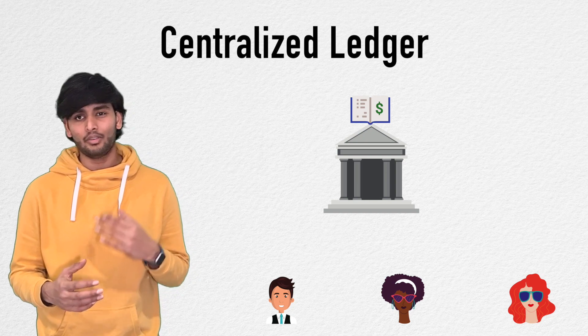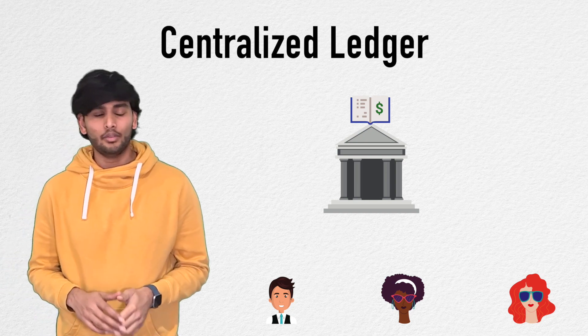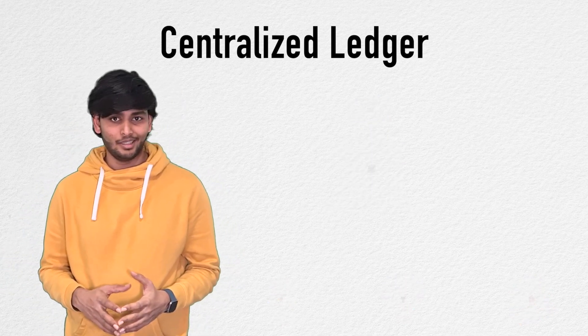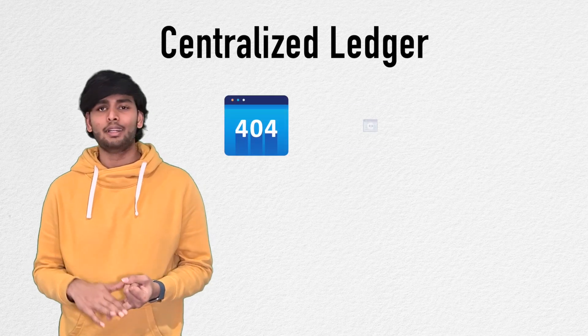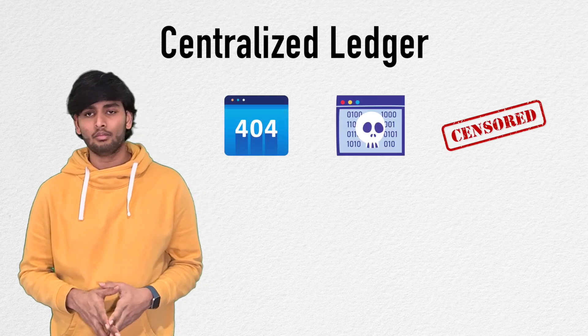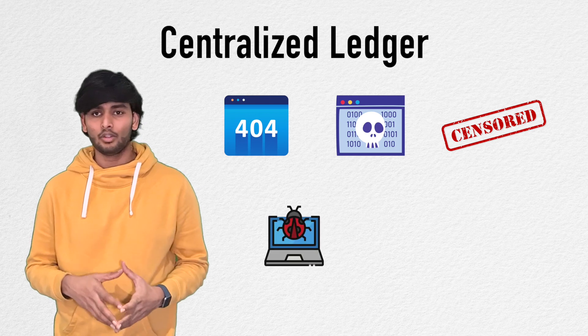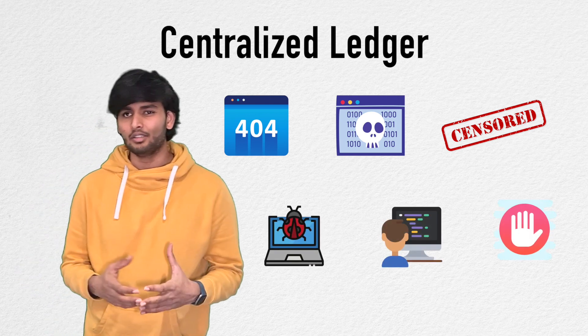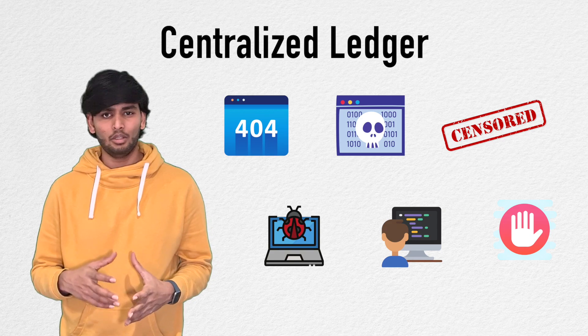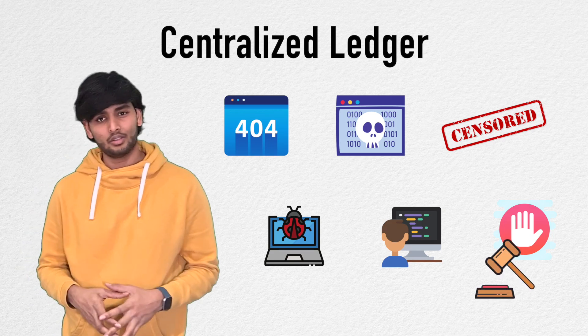In this case, the bank controls this ledger exclusively, so every transaction has to go through them. These are called centralized ledgers, as every transaction goes through a central entity. This works great until it doesn't — due to downtime, cyber attacks, or censorship. Because of software bugs, human error, or selectively denying service to some individuals, maybe for local regulatory reasons.